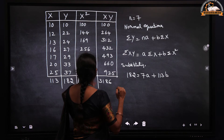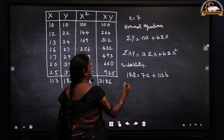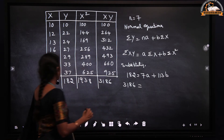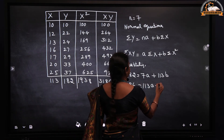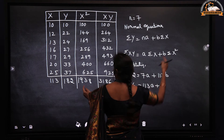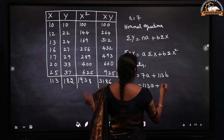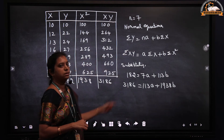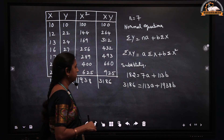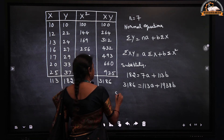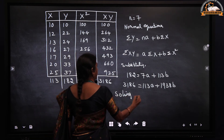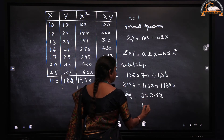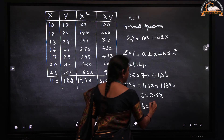The second normal equation becomes: 3186 = 113a + 1938b. After substituting all the summation values and solving the two normal equations simultaneously, we get the value of a as 0.82 and the value of b as 1.56.